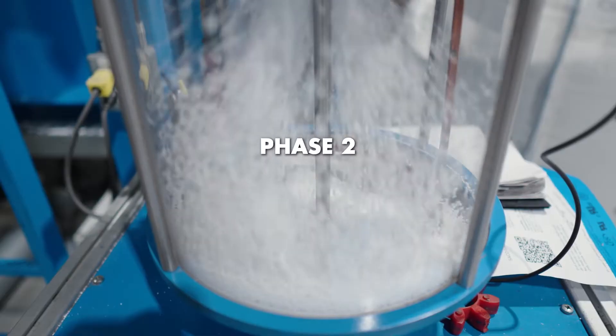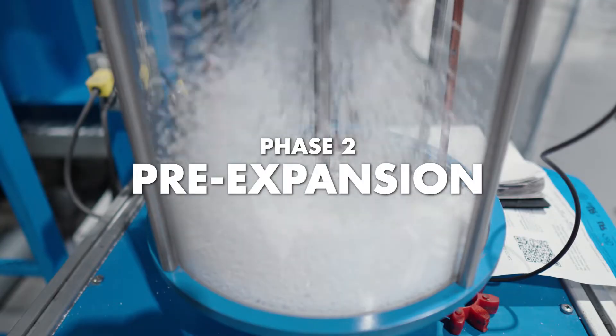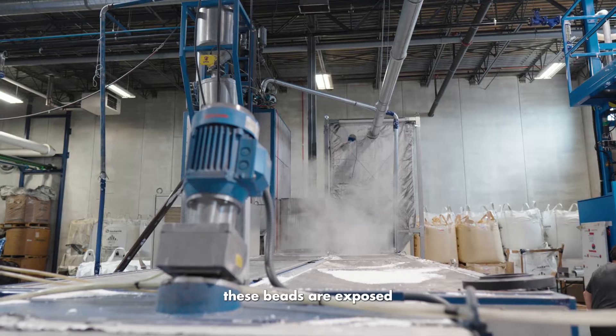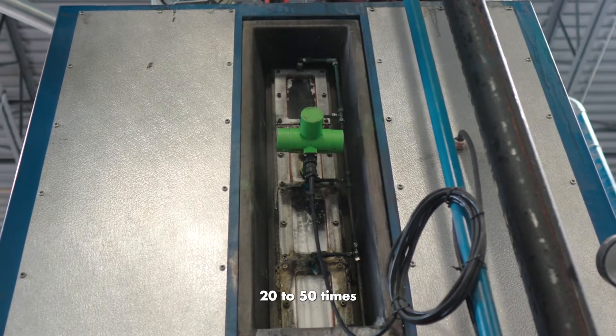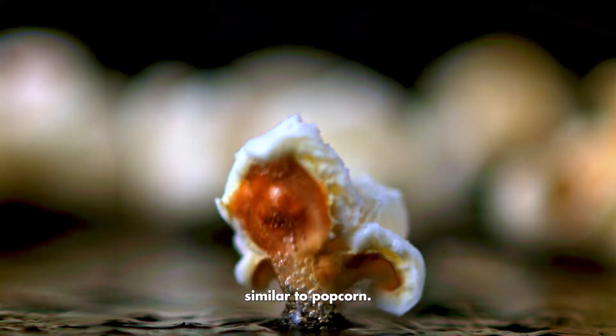Phase two, pre-expansion. During the pre-expansion process, these beads are exposed to steam, causing the blowing agent to expand 20 to 50 times its original size, similar to popcorn.